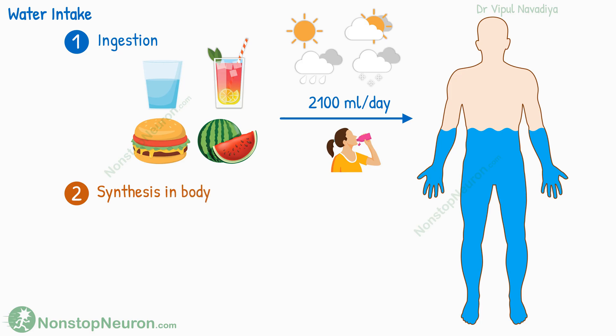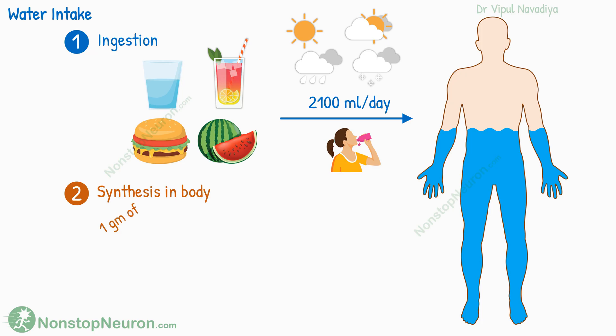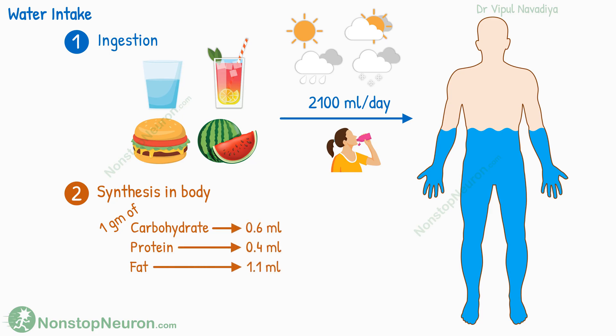The second source of water is synthesis inside the body during various metabolic reactions. The main source is the oxidation of foodstuff. For example, the oxidation of 1 gram of carbohydrate, protein, and fat each generates 0.6 ml, 0.4 ml, and 1.1 ml of water respectively.